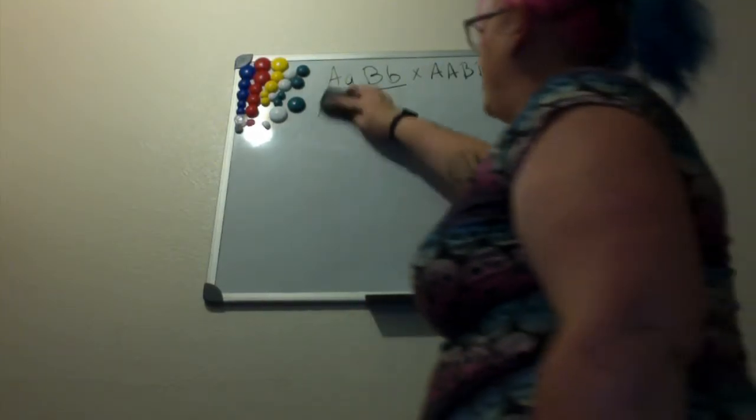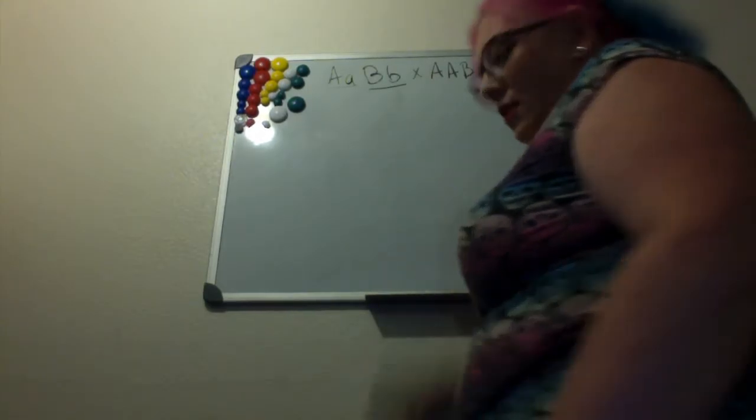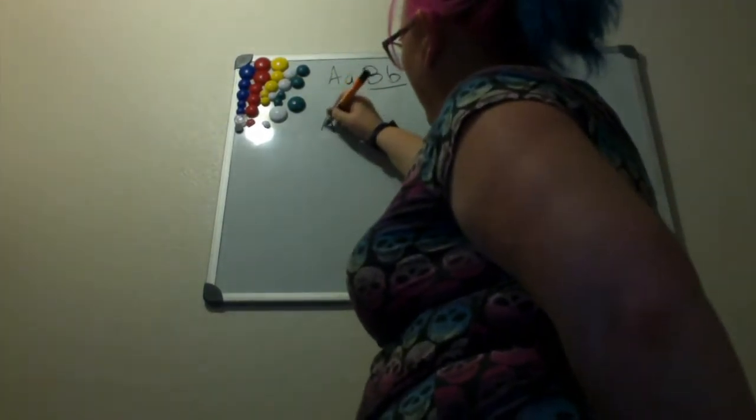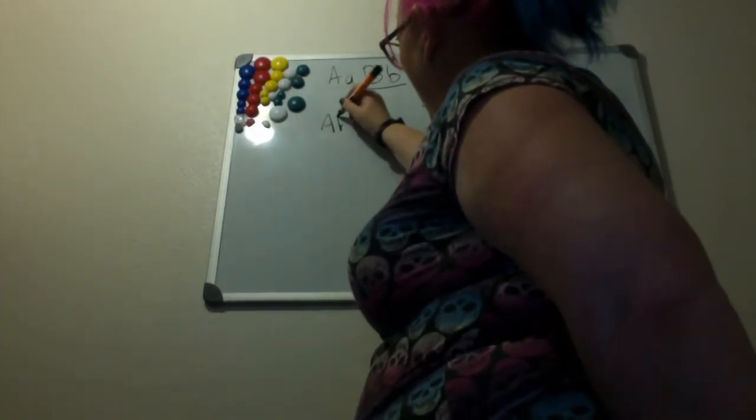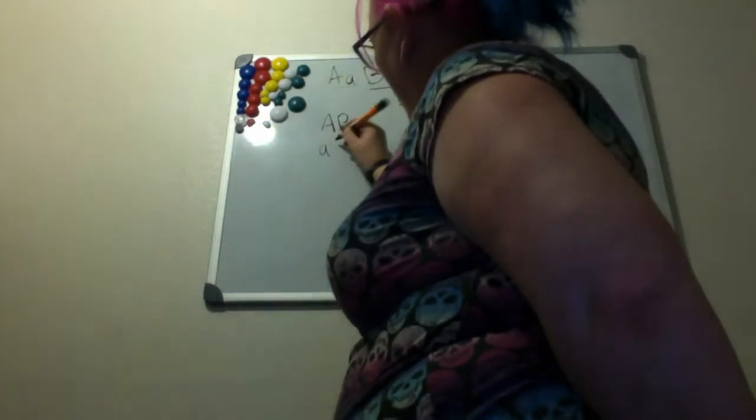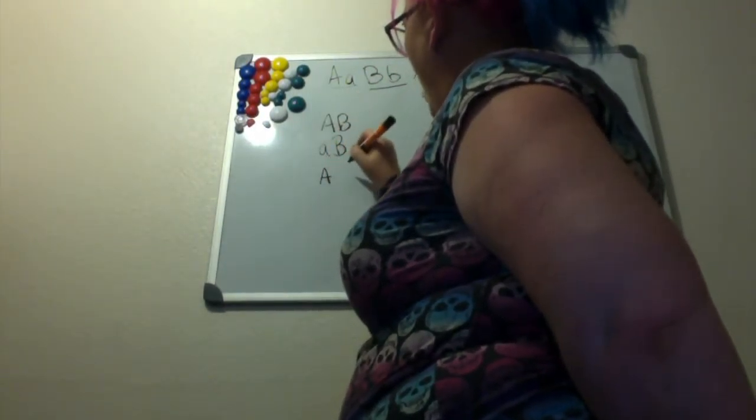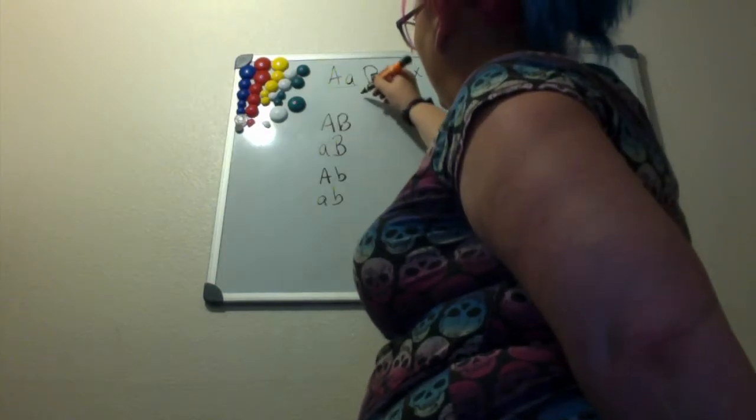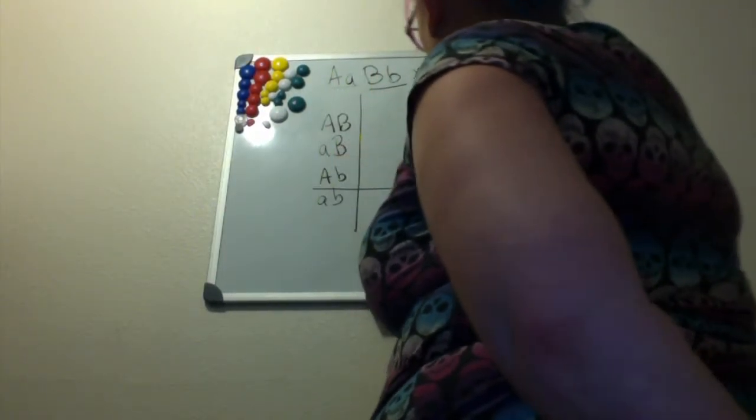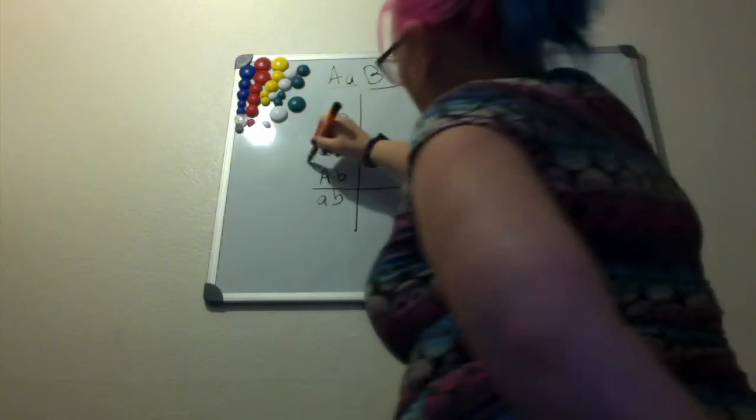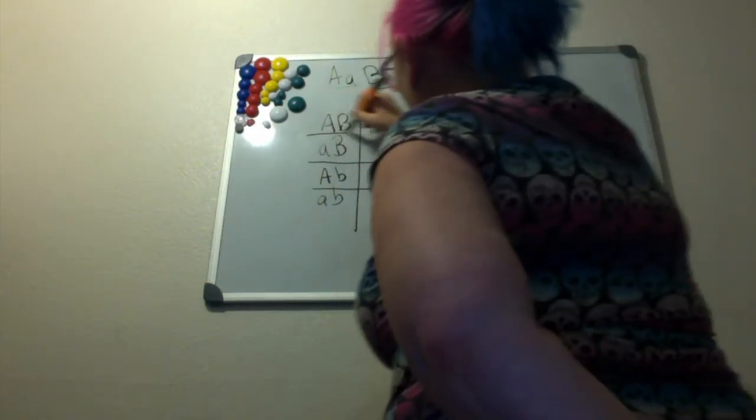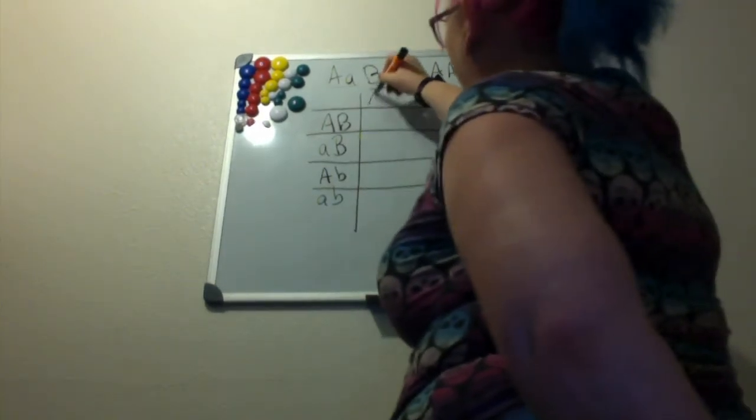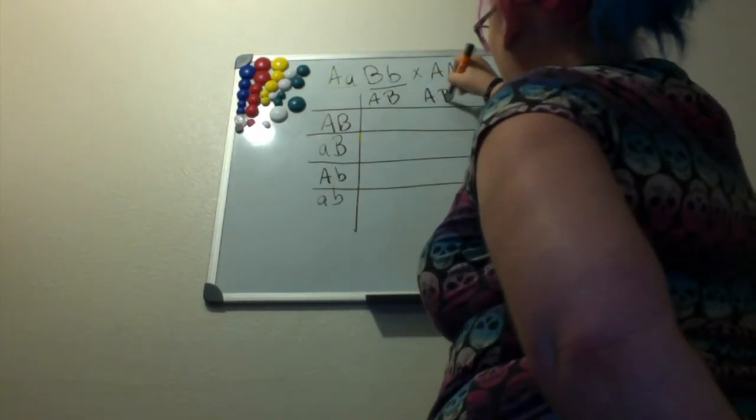We're going to do a four by four this time instead of a two by two. So we're going to have AB, Ab, aB, ab on this side, and then along the top we'll have all of them will be dominant.